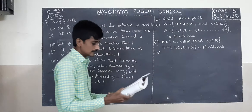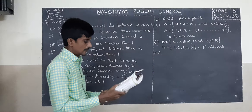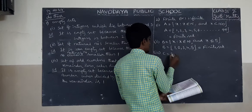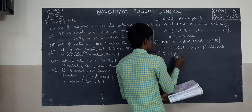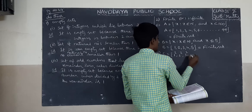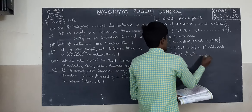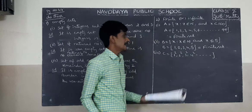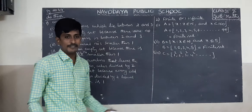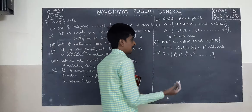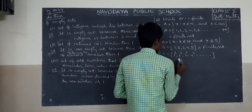Third one: C equals the set of 1 squared, 2 squared, 3 squared, 4 squared, and so on. Since 'and so on' is given, it is an infinite set.